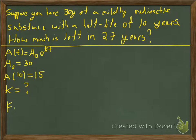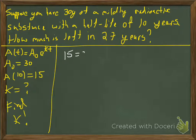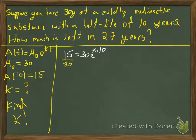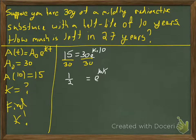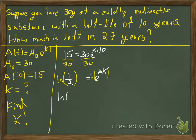We have enough information to find k, so we plug in what we know: 15 = 30e^(10k), because in 10 years we'll have half the substance left. We isolate the exponential by dividing both sides by 30, giving us 0.5 = e^(10k). Then we take the natural log of both sides.